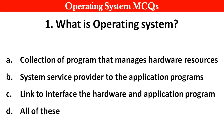Question no. 1: What is an operating system? Options: A. Collection of programs that manage hardware resources. B. System service provider to the applications program. C. Link to the interface, the hardware and applications program. D. All of these. Right answer is option D: All of these.